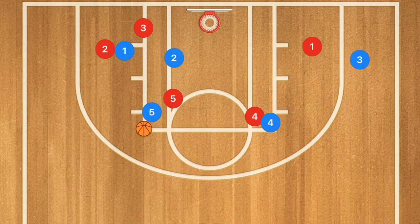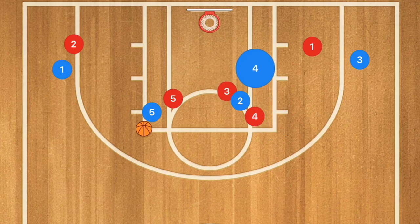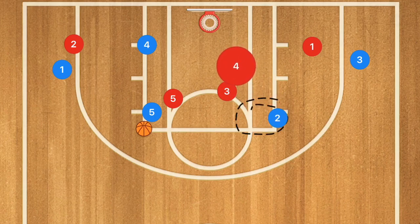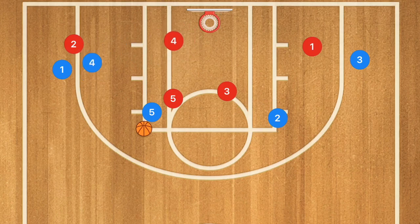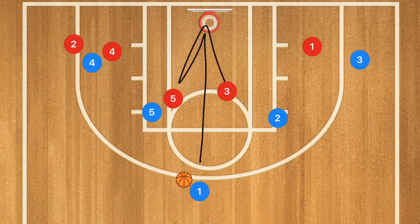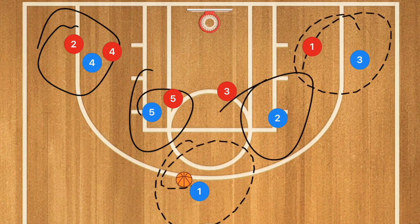If we want to get players out of the high post and keep running the motion, instead of Player 2 setting a screen on Player 3, we could have Player 2 set a back screen on Player 4 to send him down toward the low post. Player 2 fills the high post, and Player 4 could be open for the layup. If he's still defended, Player 4 sets a screen for Player 1, who fills the point position. This could open another three-point shot. We're still reading and reacting, still screening for different options while filling those five spots on the court.